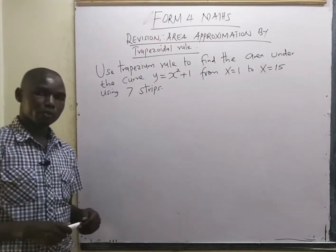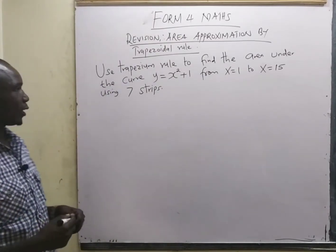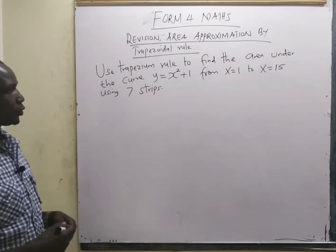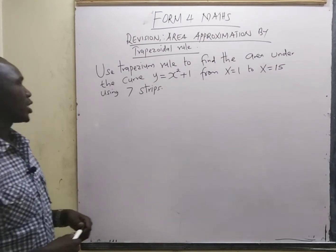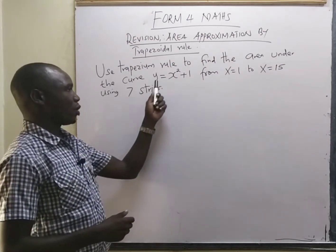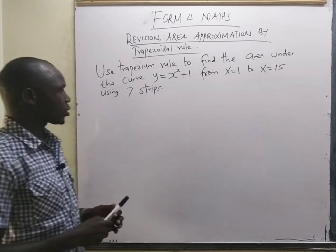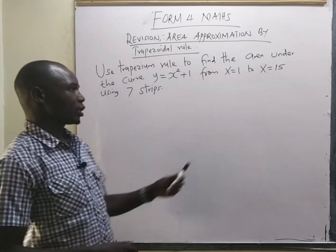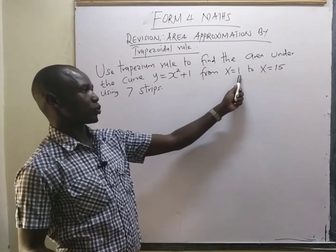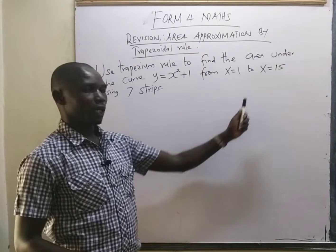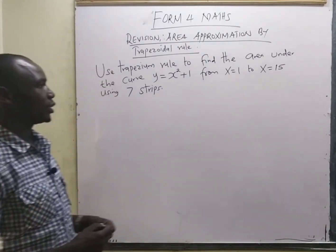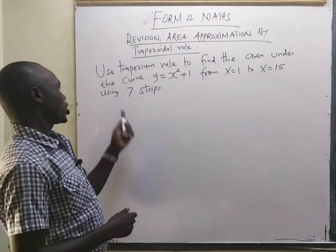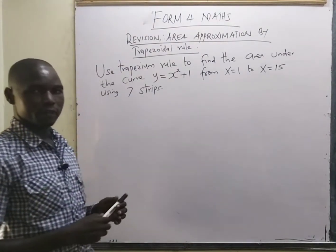Let us go through the question together. Use the trapezium rule to find the area under the curve y = x² + 1, between x = 1 and x = 15, using 7 strips.